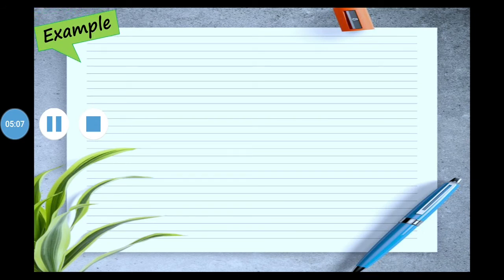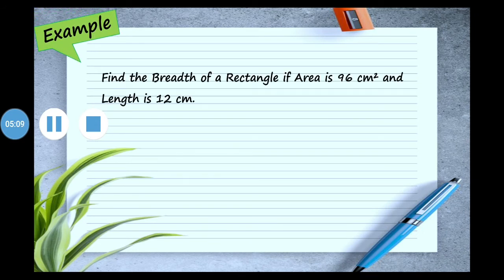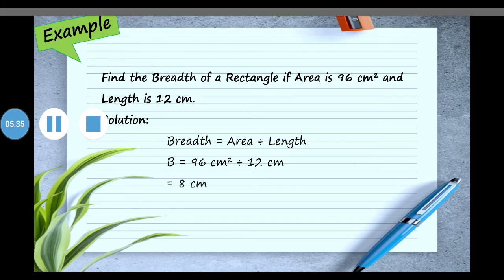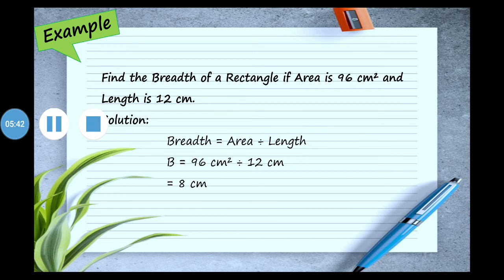Here is one more example: find the breadth of a rectangle if area is 96 square centimeters and length is 12 centimeters. To find the breadth we use the formula: breadth = area ÷ length. Area is 96 cm² and length is 12 cm. We know that 12 × 8 = 96, so the breadth is 8 centimeters.